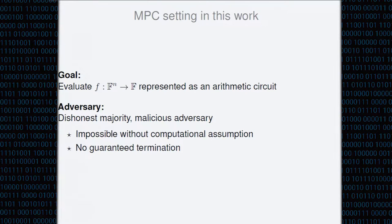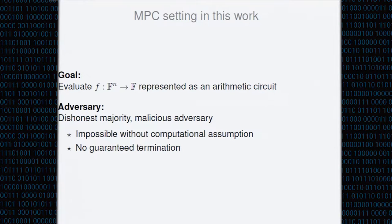We need to specify the adversary — what the adversary can do and how many parties can be corrupted. In our work we consider a static malicious adversary, so all corruptions may only take place before the protocol starts and the adversary can arbitrarily deviate from the protocol. We consider dishonest majority, so the adversary can corrupt all but one party. It is well known that with dishonest majority a conditionally secure protocol cannot exist and we cannot guarantee successful termination, so the protocol simply aborts if some corruption is detected.